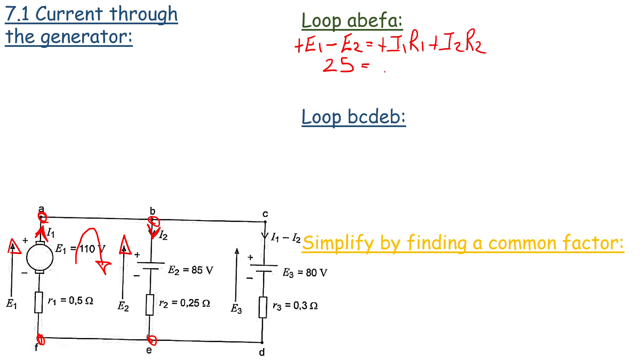Our internal resistance for I1 is 0.5 I1 and our second resistance is 0.25 I2. And if we want we can call this equation 1.